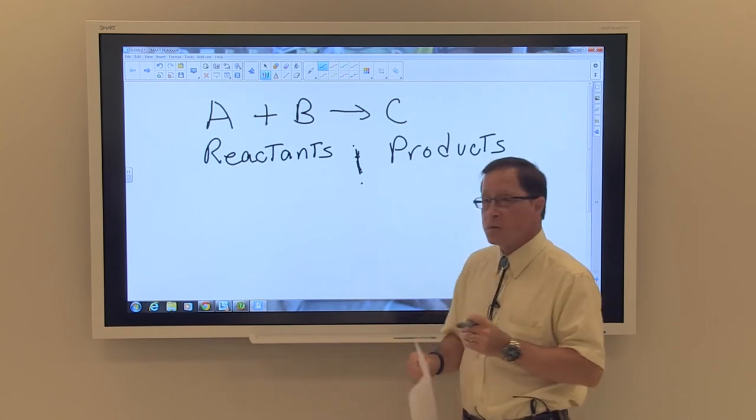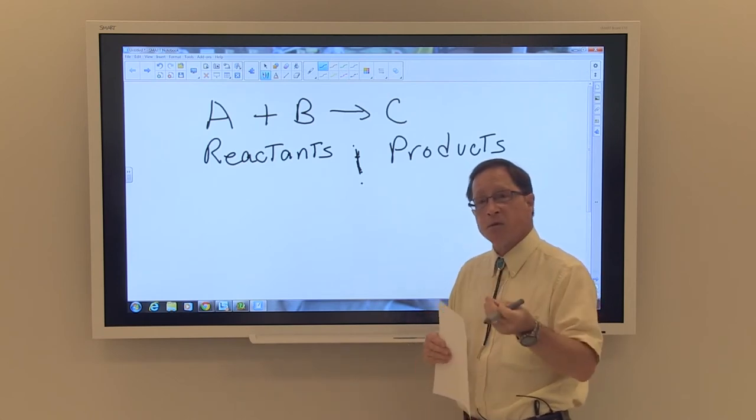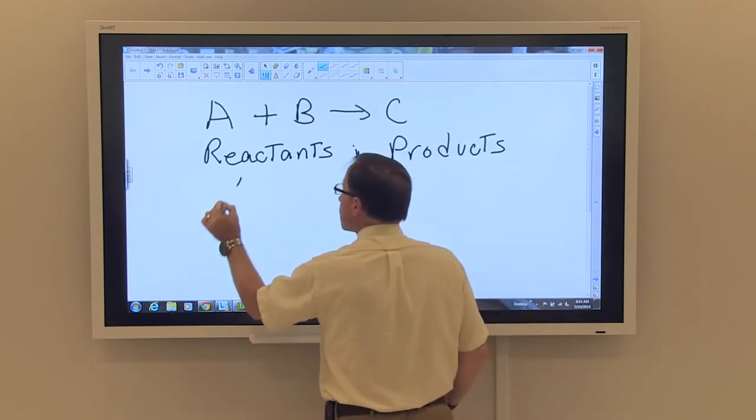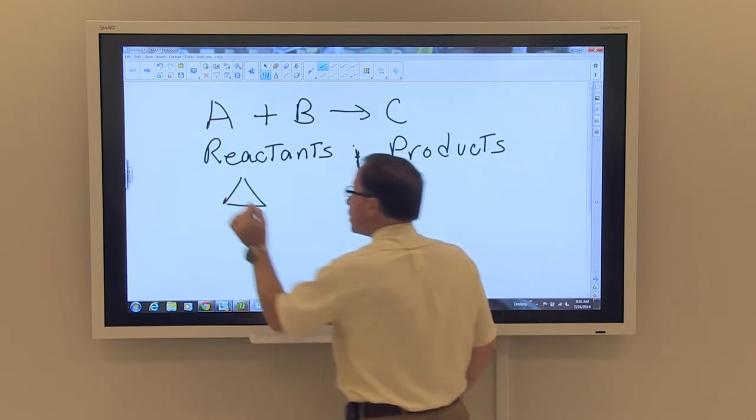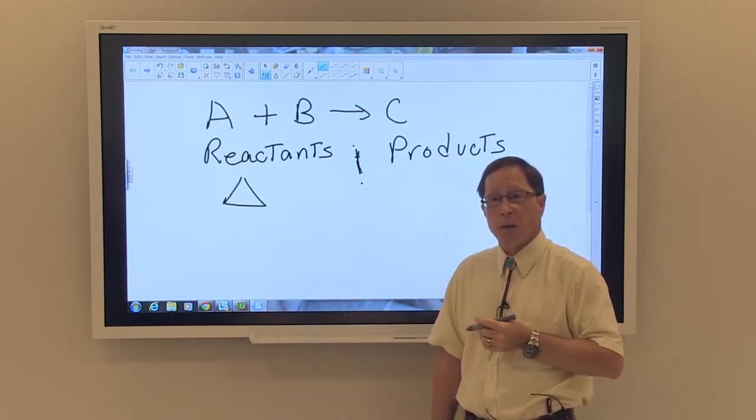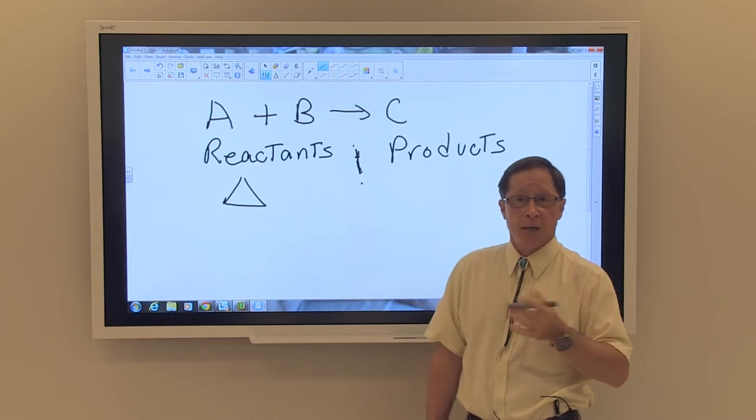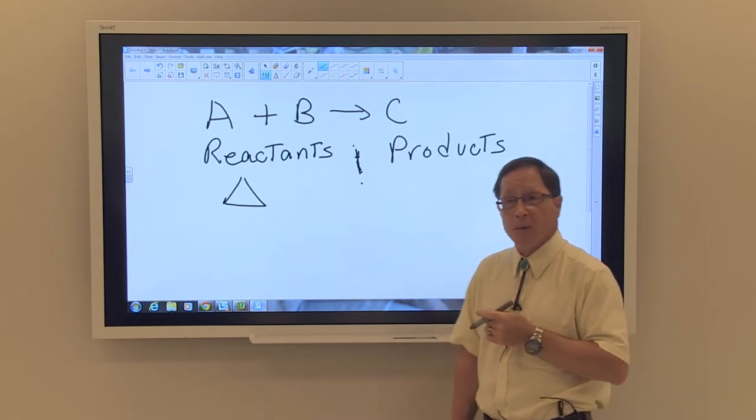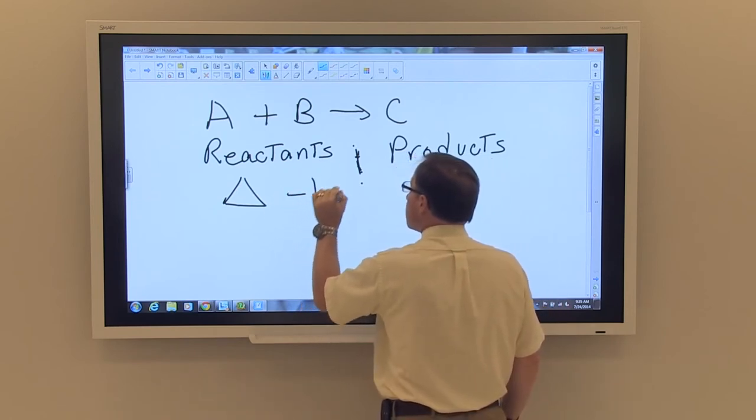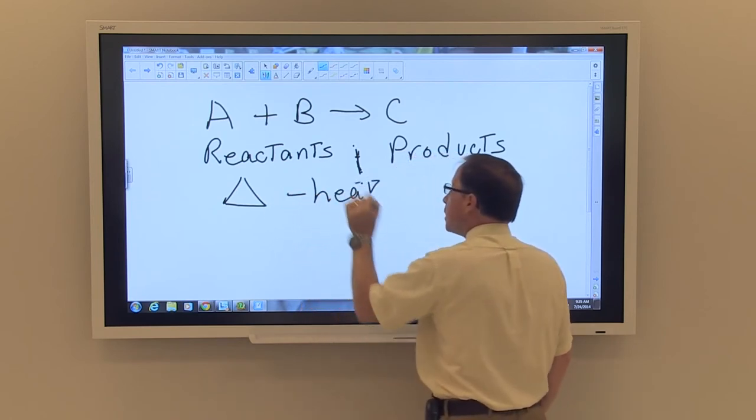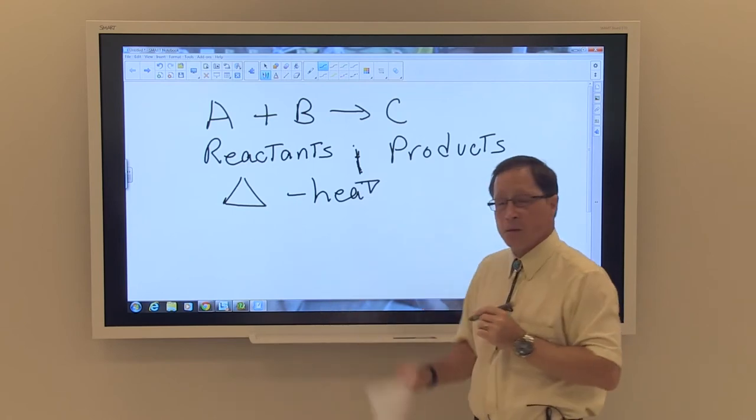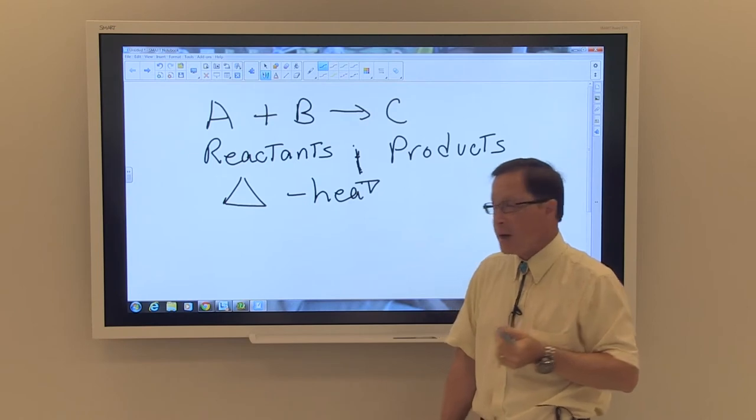When we do reactions, we simply have to state what the conditions are. For instance, if you see a triangle, which we can refer to as delta, this can mean change. But in the case of a reaction, typically it means that heat has been added to the process. So we have heat essentially driving the reaction.